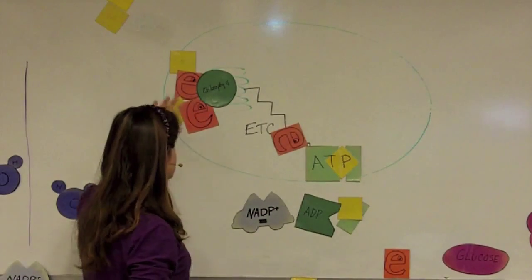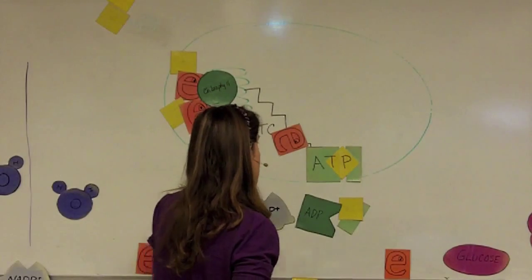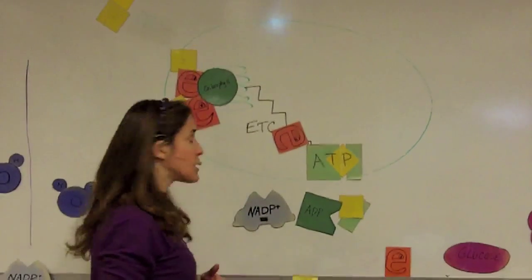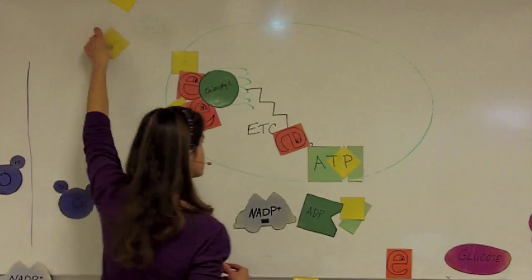So we've captured energy from the sun in molecules of ATP. Now the electrons are again at a lower energy state. They're going to be charged up again by energy from the sun.